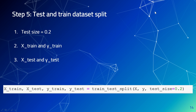In step 5, we split the data into a training data set and a test data set. A test size of 0.2 means the first 80% of the data is used for training and the remaining 20% is used for testing. X_train and y_train are the training data set, and X_test and y_test are the test data set.